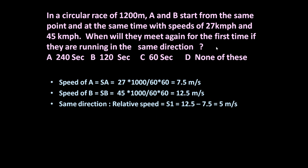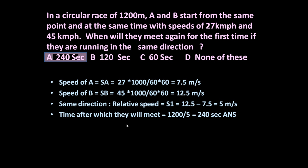Now we have to determine the time after which they will meet first. Time after which they will meet = 1200 divided by the relative speed between A and B = 1200 / 5 = 240 seconds. So on a circular track, if they are moving in the same direction, they will meet again after 240 seconds.